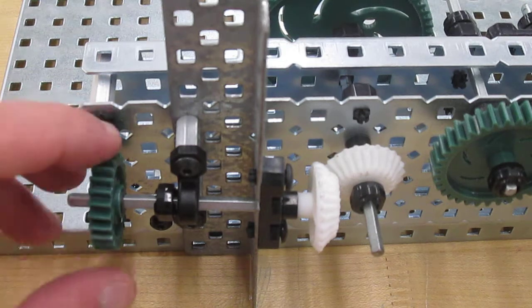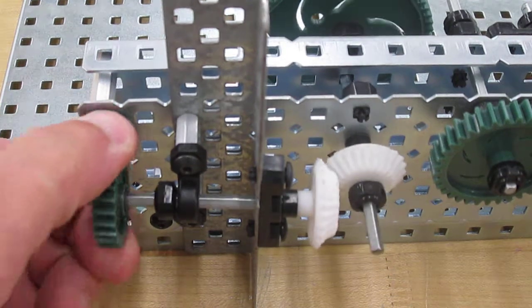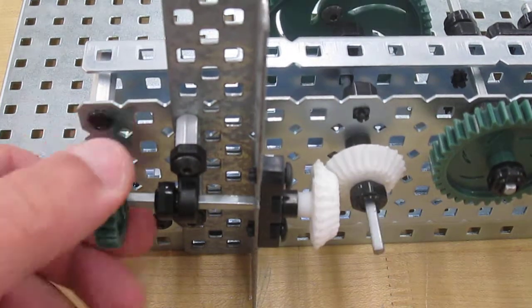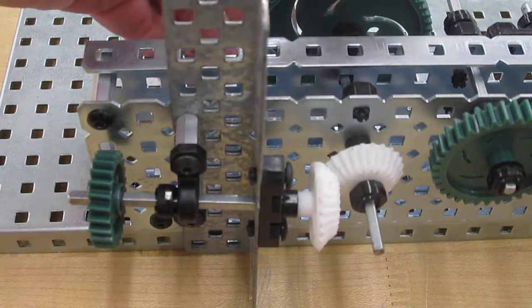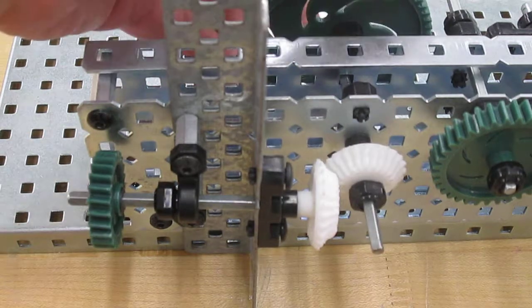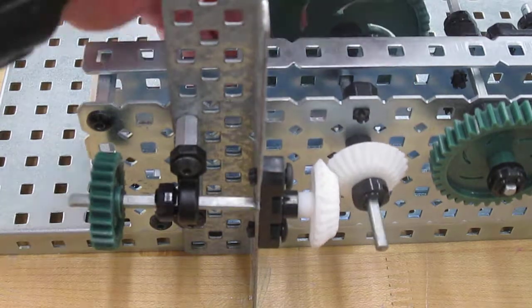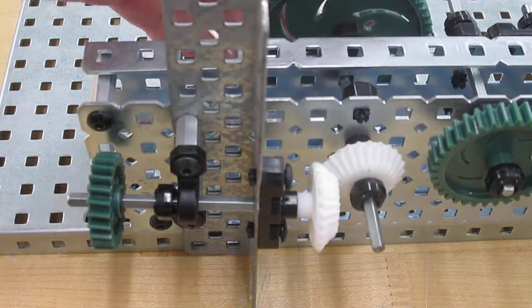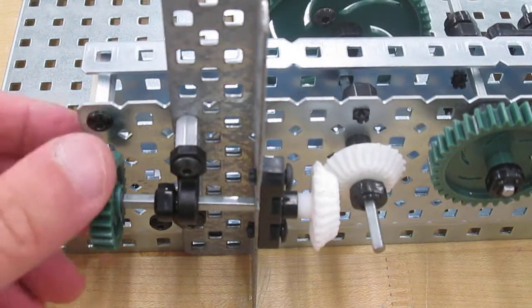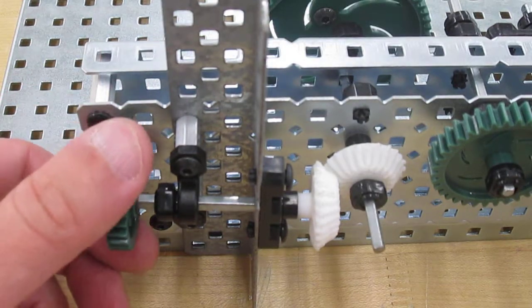The flow of power is reversible because if I turn this I can go over here and turn the other gear back here and it will turn the other gear so we can reverse it.